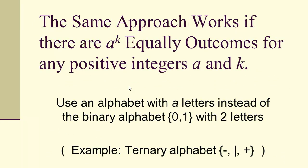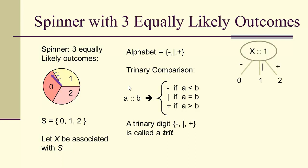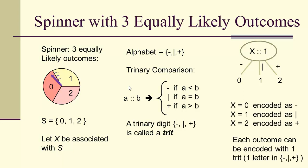The same approach works if there are a^k equally likely outcomes for any positive integers a and k — we just use an alphabet with A letters instead of the binary alphabet. For example, using a ternary alphabet, our units are trits. For a spinner with 3 equally likely outcomes, the alphabet is {minus, bar, plus} from a trinary comparison. Each outcome encodes with one trit, so the self-information is log base 3 of 3, which equals one trit.